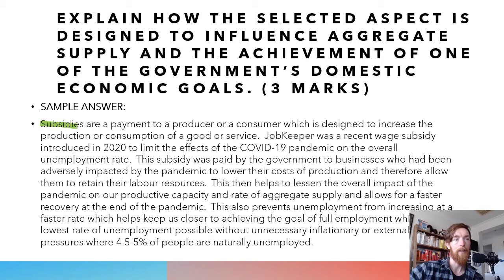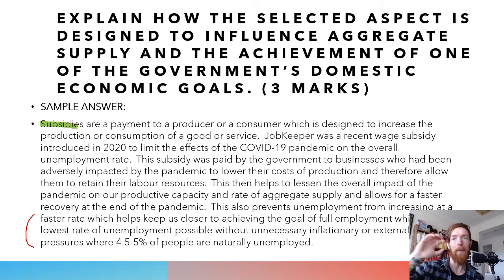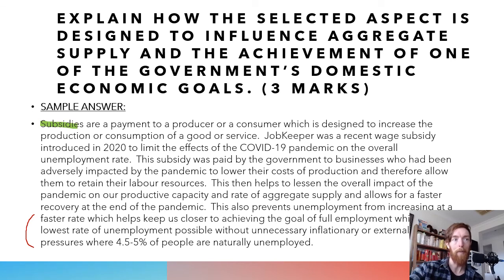One key thing: because the question asks about achievement of a macroeconomic goal, note that a lot of what the government is putting in place isn't actually to achieve the goal — it's to lessen the negative impact on that goal. If you're specific about that, you'll have the strongest answer. They aren't technically trying to achieve full employment right now — they're trying to lessen the negative impact of the pandemic on that goal. Without JobKeeper, unemployment would be around 15%, but we've been hovering around 7.2–7.4%, which has lessened the overall impact.